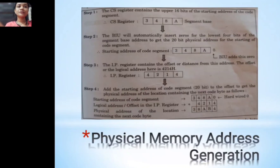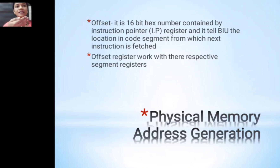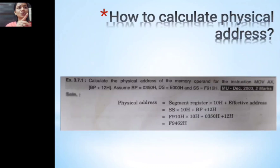The offset is a 16-bit hex number held in the instruction pointer register. It tells the BIU which location in the code segment the next instruction should be fetched from. Each offset register works with its respective segment register — the offset for the code segment works with CS, the offset for the data segment works with DS, and so on.